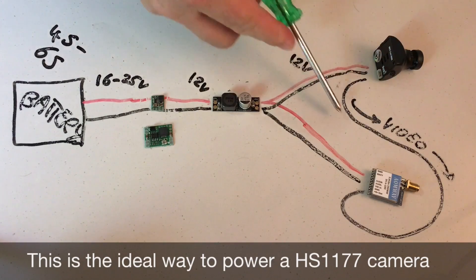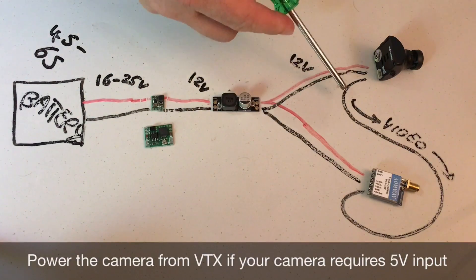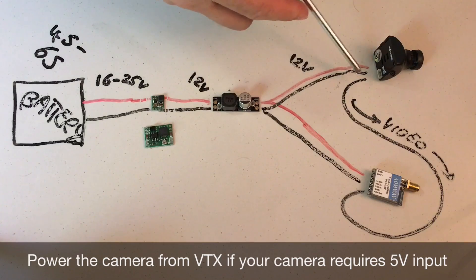And this black line once again represents the yellow wire that would be in the circuit, taking the video output from the camera to the video input on the video transmitter. See you later.